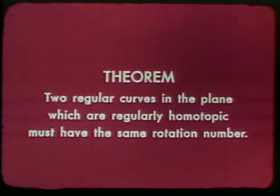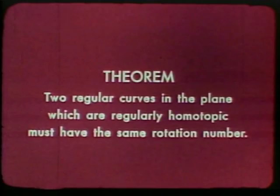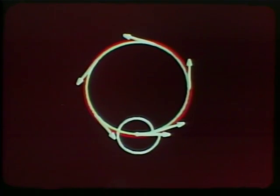This theorem shows that a circle and a figure eight are not regularly homotopic. We can also use it to show that a circle cannot be turned inside out. Suppose we have a counterclockwise circle, which has rotation number one — note that the outside is red. If we break the circle, which is not allowed in a regular homotopy, we can turn it inside out. Note that the red is now on the inside, and the circle is traced in a clockwise direction, giving rotation number minus one. The theorem tells us that the two curves cannot be regularly homotopic because they have different rotation numbers. So any attempt to turn a circle inside out will violate one of the conditions for a regular homotopy — for instance, this deformation has cusps.